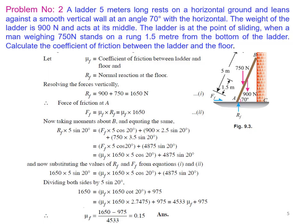Problem 2: A ladder 5 meters long rests on horizontal ground and leans against a smooth vertical wall at an angle of 70 degrees with the horizontal. The weight of the ladder is 900 N acting at its middle. The ladder is at the point of sliding when a man weighing 750 N stands on a rung 1.5 meters from the bottom. Calculate the coefficient of friction between the ladder and the floor.